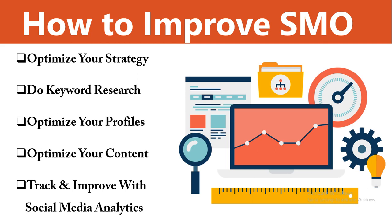Last is to track and improve with social media analytics. Just like with SEO, you should track your SMO efforts using social media analytics. Some of this can be done through Google Analytics using UTM codes — short-term URLs that allow you to attribute website traffic from social media to a specific channel or campaign. In addition to this data, use reports from your social media marketing tool to get a full picture of the impact of your campaigns.